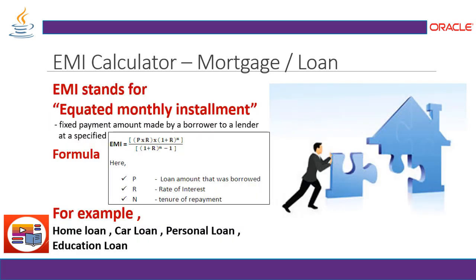Before we get into detail, let's first see what an EMI calculator actually is. EMI stands for equated monthly installments, also known as a mortgage calculator or loan calculator. Basically, when dealing with loan installations and borrowing money from a bank, EMI is a fixed payment amount made by a borrower to a lender at a specific period of time.